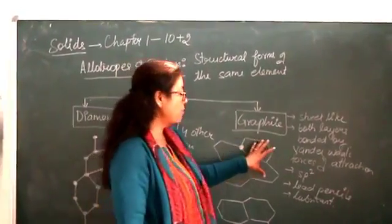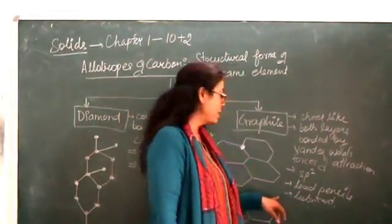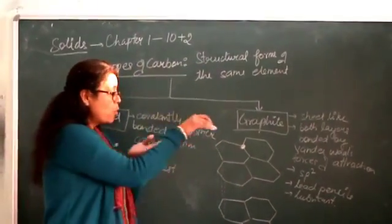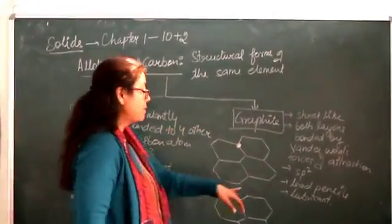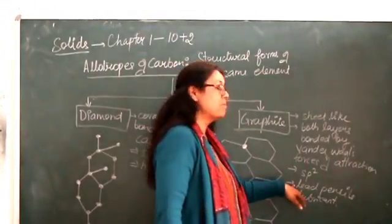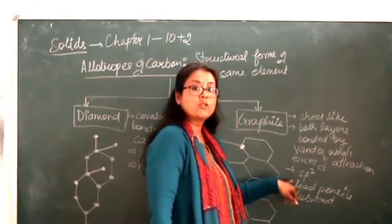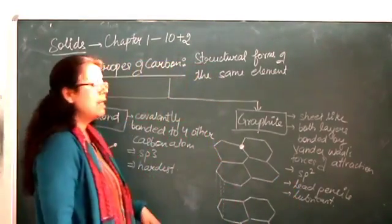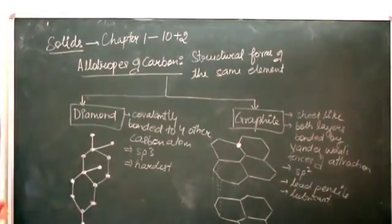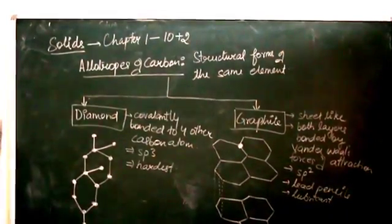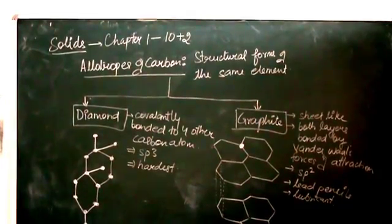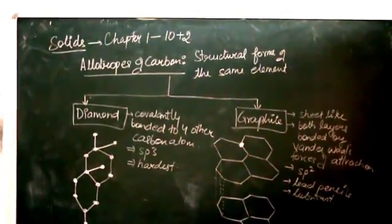Graphite is soft, and as one layer can easily slip over the other, it is used as a lubricant. It also marks paper black and is used as the lead in lead pencils. This concludes our first topic — the classification of solids.